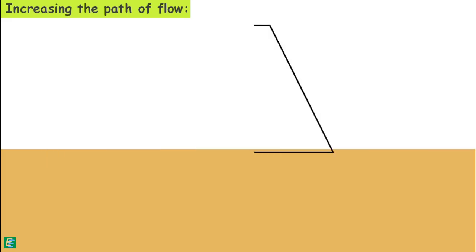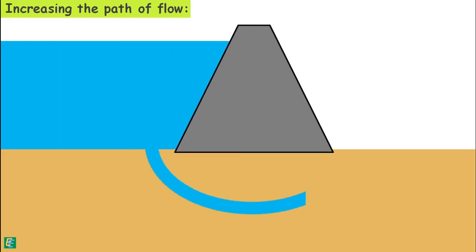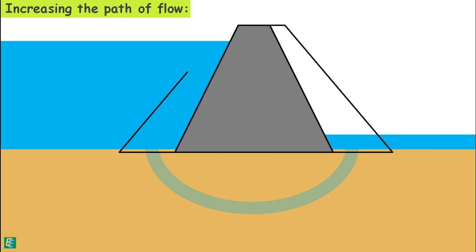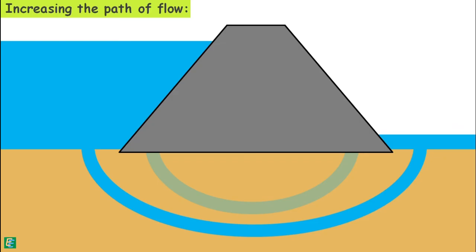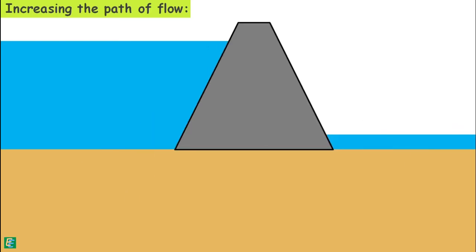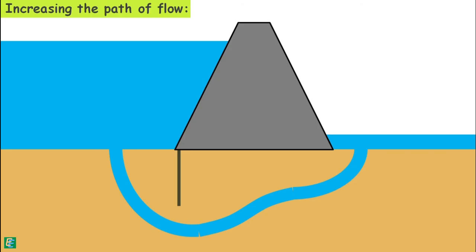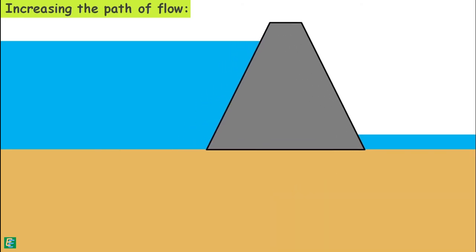There are a few methods to increase the flow path. First, we can increase the base width of the hydraulic structure so water has to travel more to reach the downstream. Second, we can provide vertical cutoff walls below the structure at the upstream end, thereby forcing water to go below this wall to reach the downstream. Third, we can also provide an impervious blanket on the upstream.